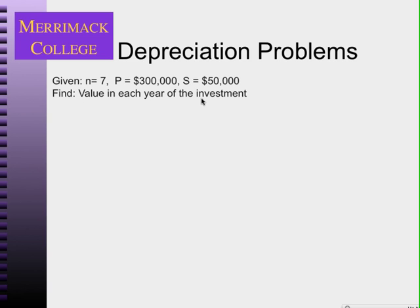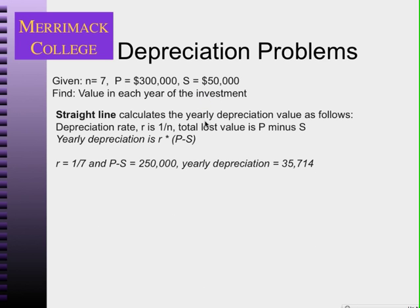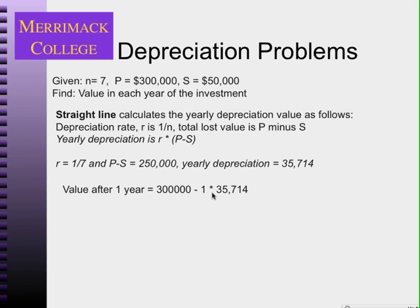Using the straight line method, the depreciation rate is 1 over n, so it's 1/7. The total loss value is the present worth of $300,000 minus the salvage value of $50,000, which equals $250,000. So the yearly depreciation is 1/7 times $250,000, which equals $35,714.